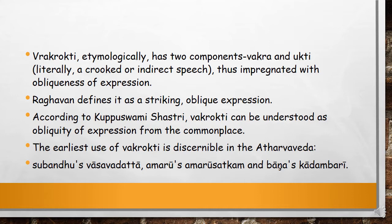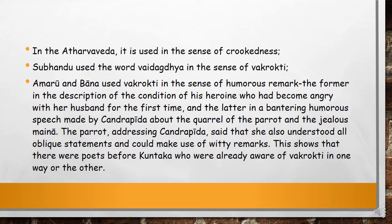The earliest use of Vakropti is discernible in the Atharva Veda. Subhandu used it in Vasvadatta, Amaru used it in Amarasuktam, and Bana used it in Kadambari. In the Atharva Veda the word Vakropti was used in the sense of crookedness, and the word Vidvata has also been used in the sense of Vakropti by Subhandu. Amaru and Bana both used Vakropti in the sense of humor — the former in the description of a heroine who had become angry with her husband for the first time, and the latter in a bantering humorous speech made by Kandripada about the quarrel of the parrot and the jealous myna.